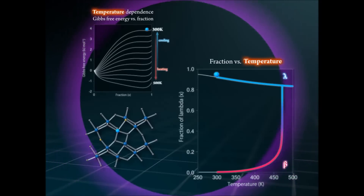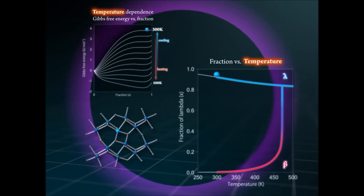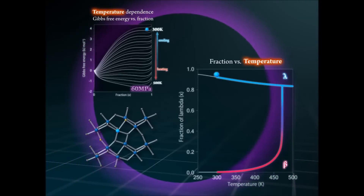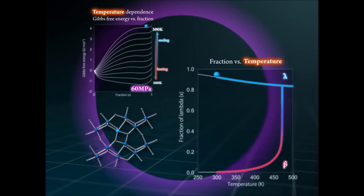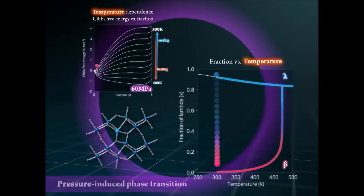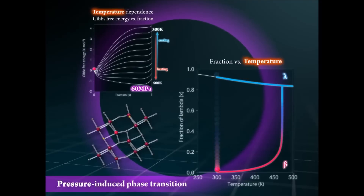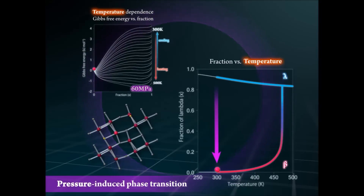By applying pressure, the energy barrier disappears and a pressure-induced phase transition occurs from lambda to beta phase, releasing the accumulated heat energy.